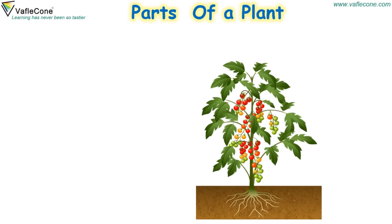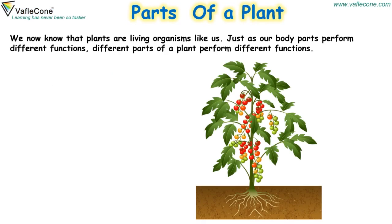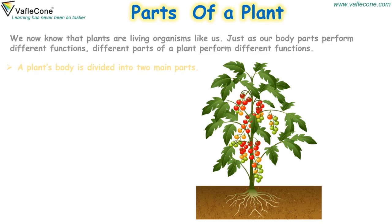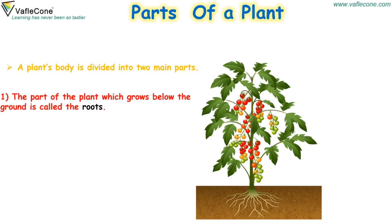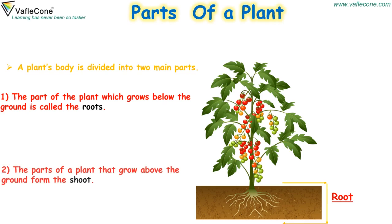Parts of a plant. We now know that plants are living organisms like us. Just as our body parts perform different functions, different parts of a plant perform different functions. A plant's body is divided into two main parts. The part of plant which grows below the ground is called the roots. The parts of a plant that grow above the ground form the shoot.